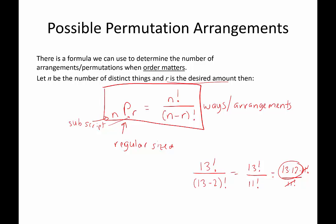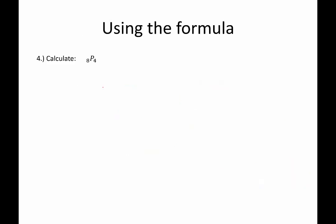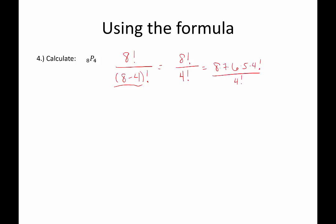Now let's look at examples of simplifying permutations using the formula. 8 permuted 4 ways: that's 8 factorial divided by (8 minus 4) factorial, which is 8 factorial over 4 factorial. That expands to 8 times 7 times 6 times 5 times 4 factorial over 4 factorial — those cancel. 8 times 7 times 6 times 5 equals 1,680.